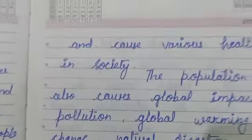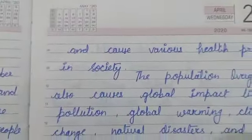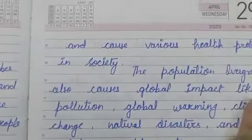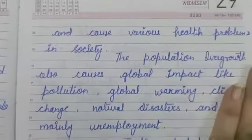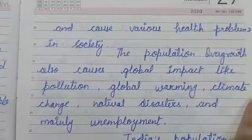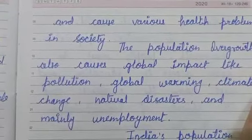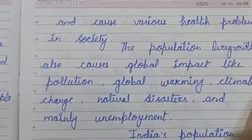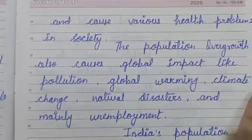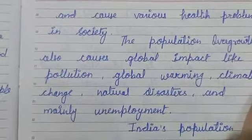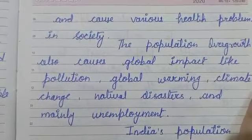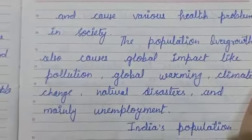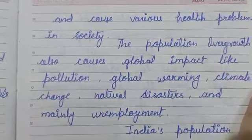Population overgrowth also causes global impacts like air pollution, global warming, climate change, natural disasters, and mainly unemployment.